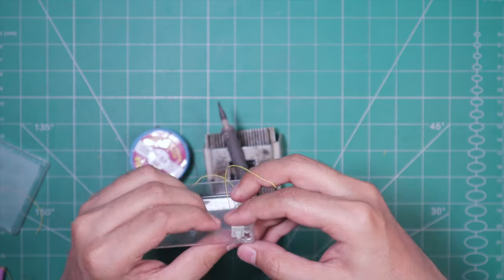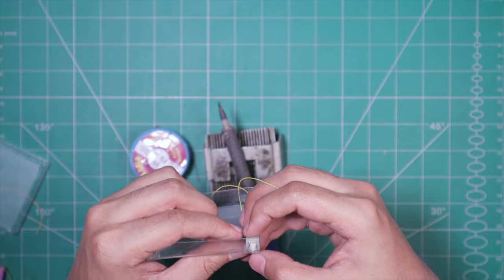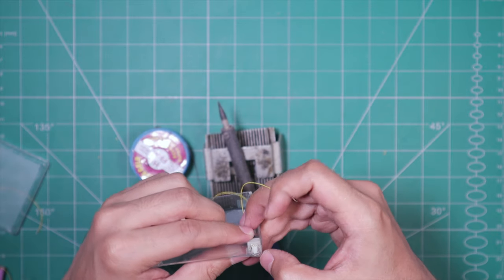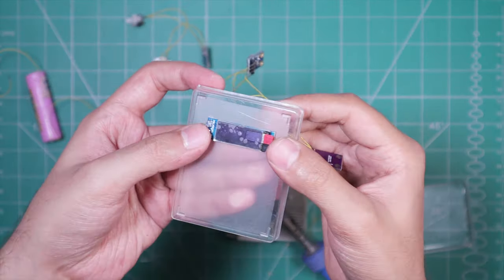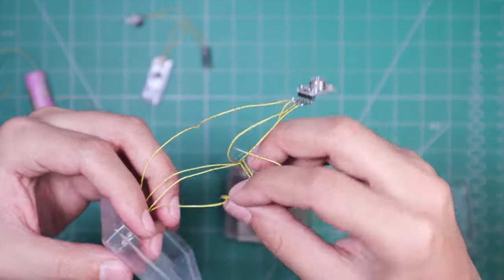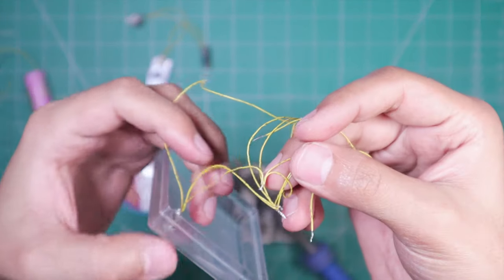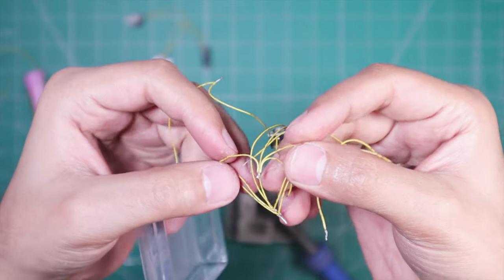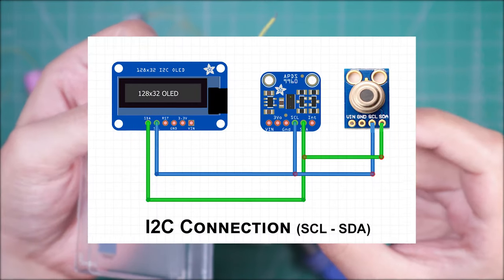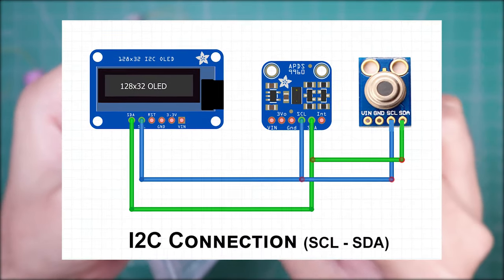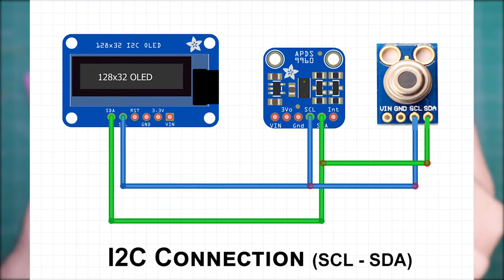All right, so as all the holes are done, what exactly am I gonna do now? Well, that's what I asked her, if you know what I mean. So as you can see, I've already connected OLED display, proximity and IR temperature sensor all together in parallel, because they all are I2C sensors that need to be connected to SCL and SDA pin of the Arduino Nano.